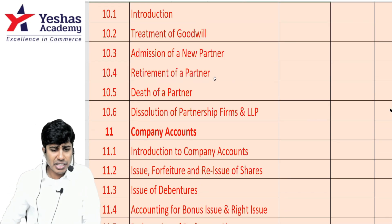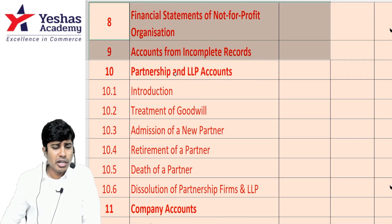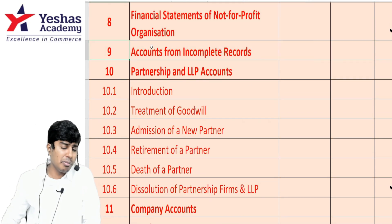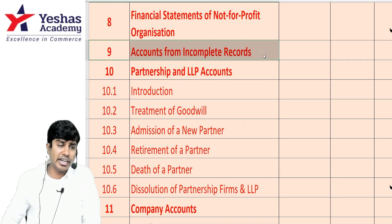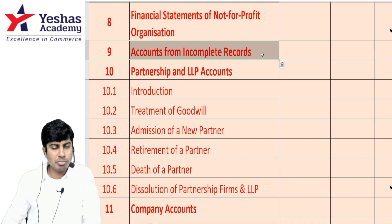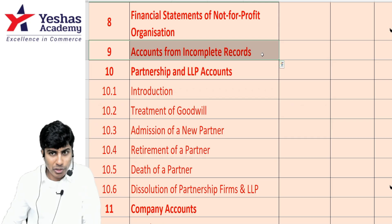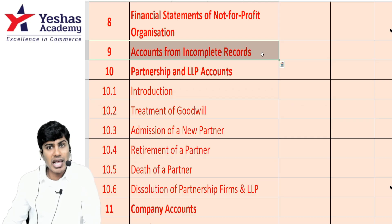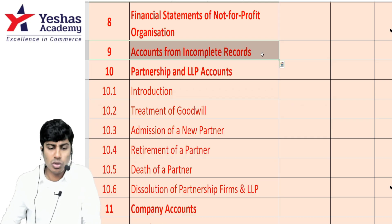For incomplete records, remember to practice both types of problems: the statement of affairs method — where records are maintained as incomplete — as well as conversion of single entry to double entry.